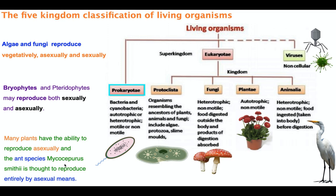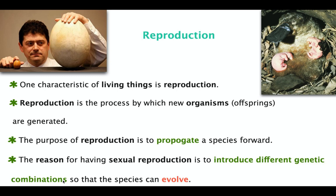Most animals reproduce sexually. A few animals can avoid the sexual procedure — for example, one ant species, Mycocepurus smithii, can reproduce entirely by asexual means. Reproduction is very important for any living organism because it creates new organisms known as offspring. Sexual reproduction is more advanced because it introduces different genetic combinations, meaning offspring are genetically different from their parents.